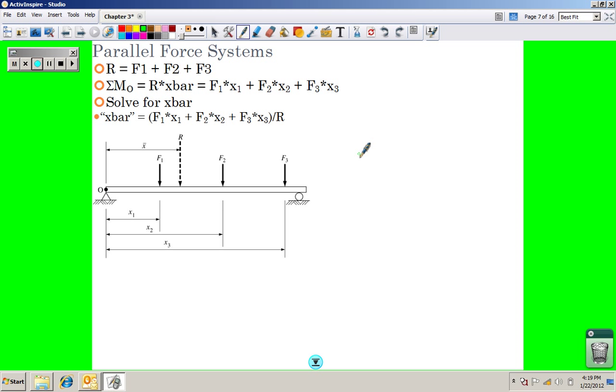Alright, so in this example we're going to talk about parallel force systems. All the forces are acting in a single direction. Here you can see that we have three forces, F1, F2, F3, all acting strictly in the Y direction.